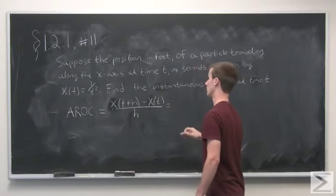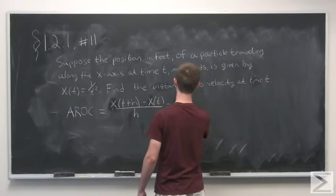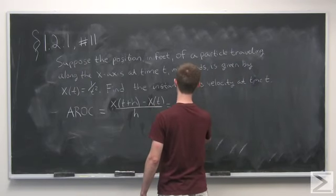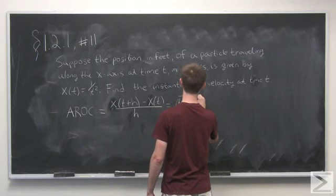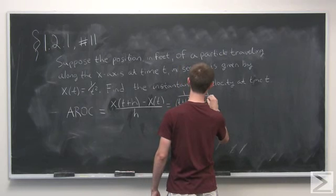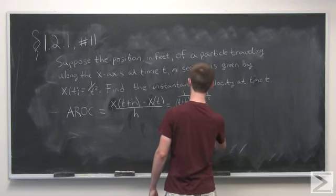Now just stick in t plus h into our function. We end up with 1 over (t plus h) squared minus 1 over t squared, all over h.